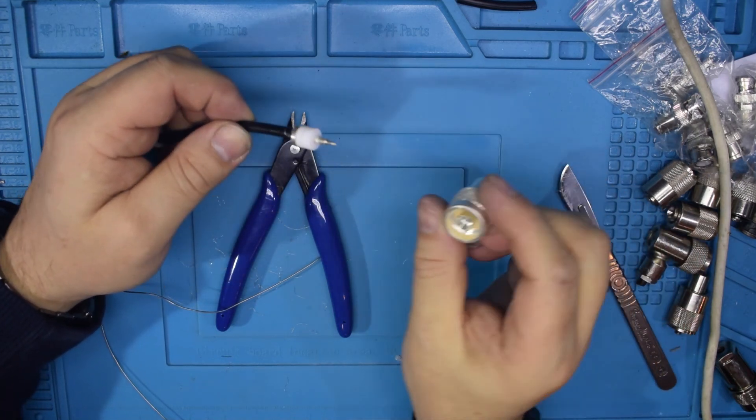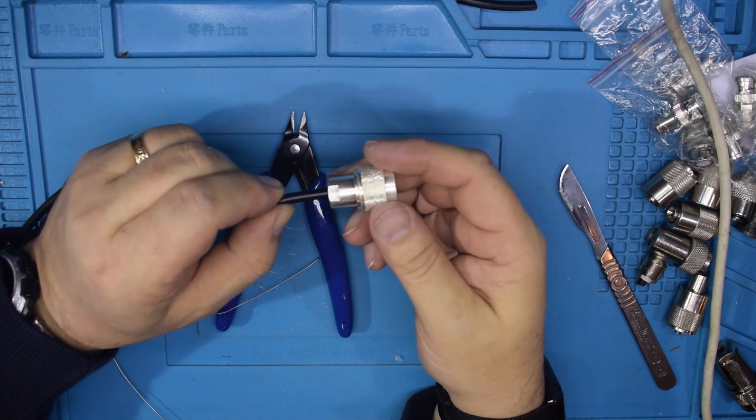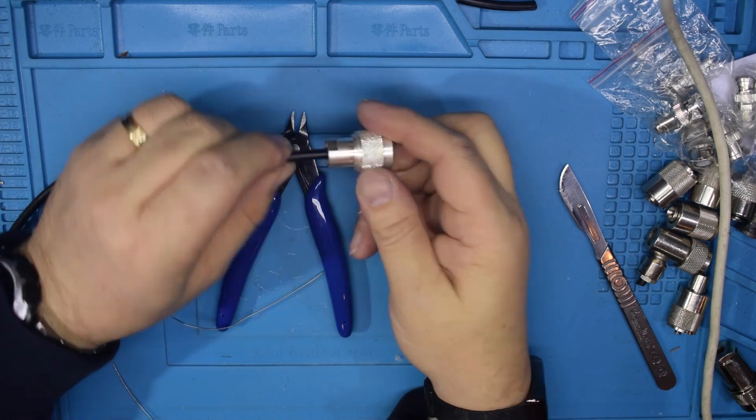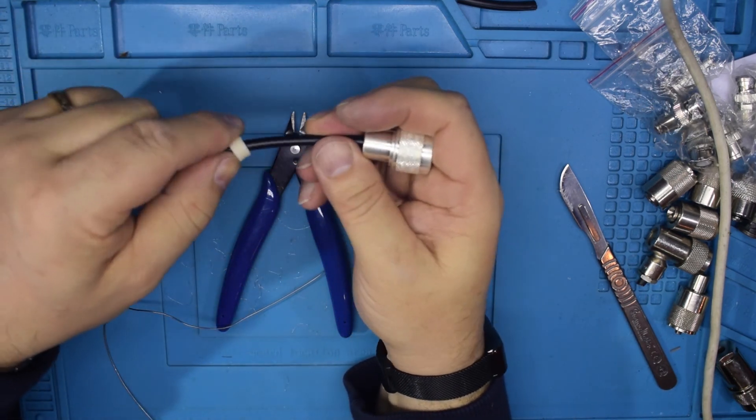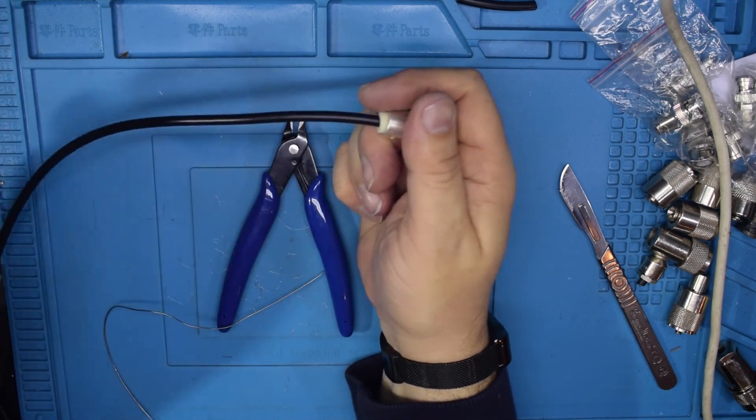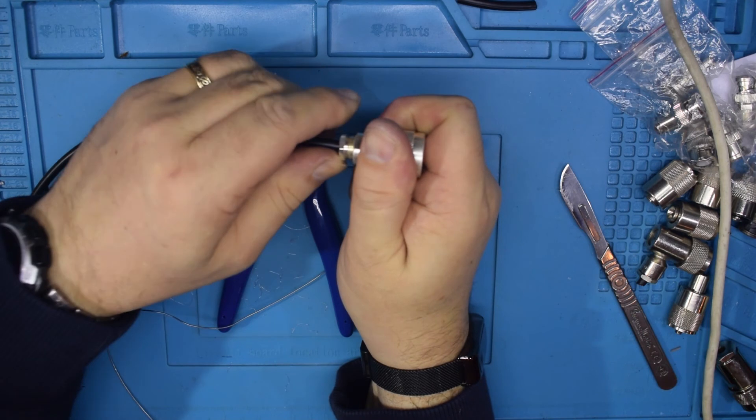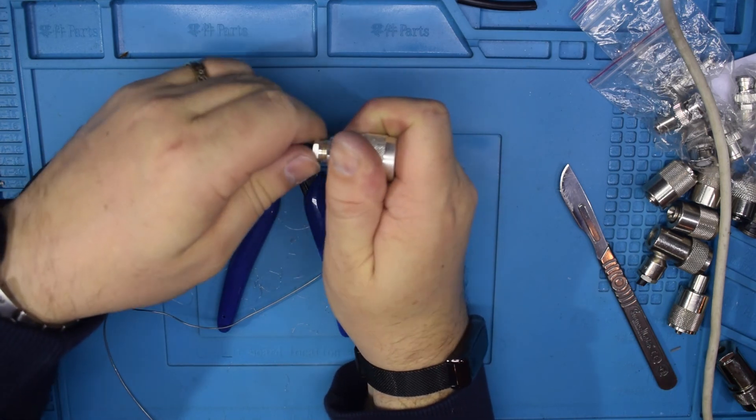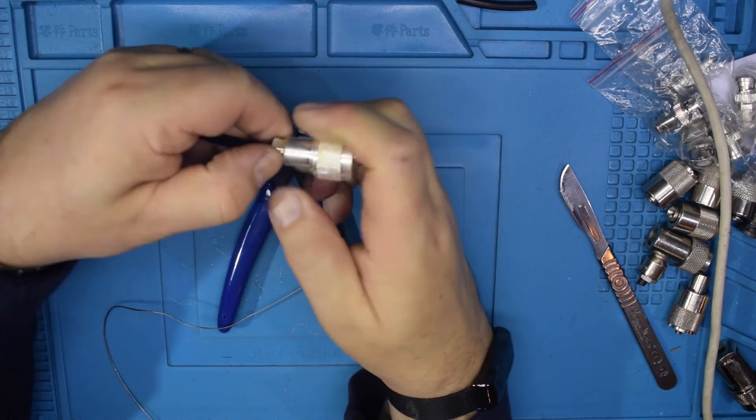And then it's just a matter of taking the end of the connector, pushing it down fully into the barrel, bringing down your rubber ring, pulling down your compression fitting, and then twisting the two together.